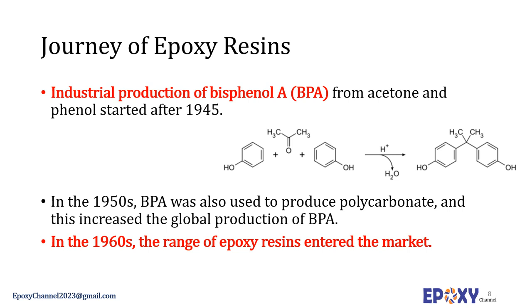Industrial production of bisphenol A from acetone and phenol started after 1945. In this schematic you can see this reaction where phenol and acetone react and BPA is synthesized. In the 1950s, BPA was also used to produce polycarbonates, which increased the global production of BPA. Finally, in the 1960s, a wider range of epoxy resins entered the market.